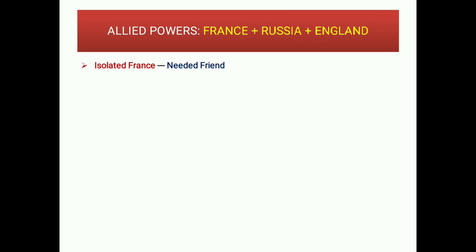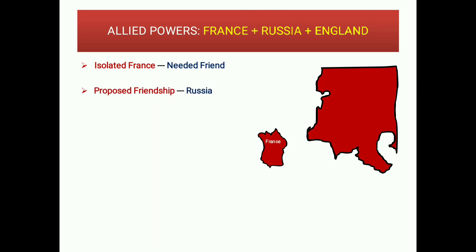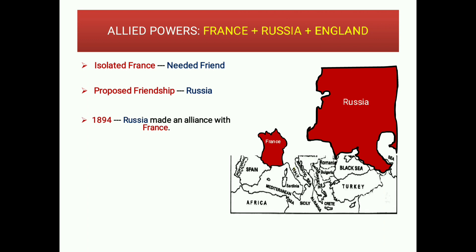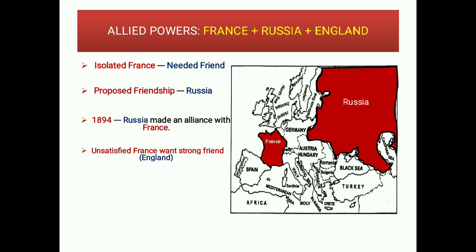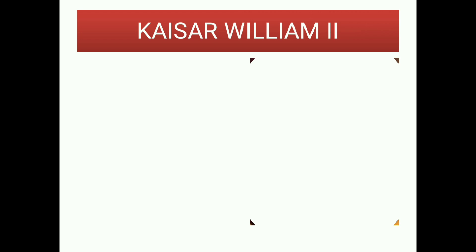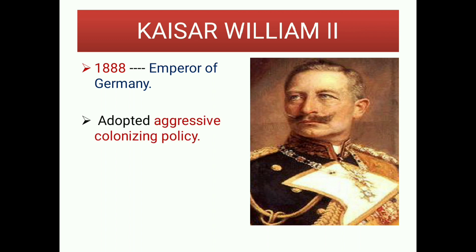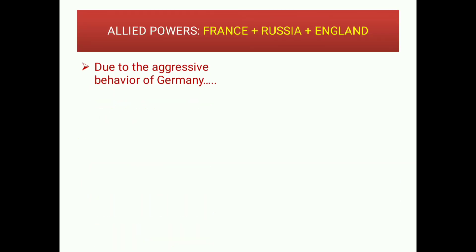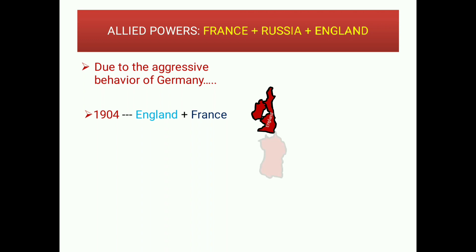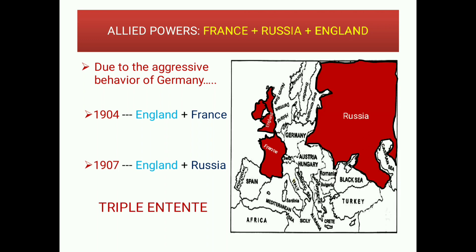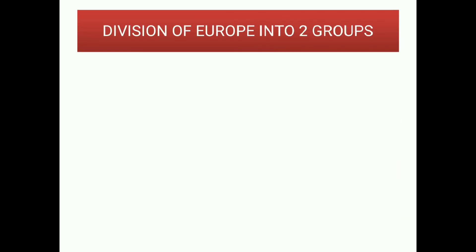Allied Powers — France, Russia, and England: Isolated France needed friends. France proposed friendship to Russia, and in 1894 Russia made an alliance with France. Meanwhile, Kaiser Wilhelm II became Emperor of Germany in 1888 and adopted an aggressive colonizing policy, increasing conflict with England. Due to Germany's aggressive behavior, England and France allied in 1904, and England and Russia allied in 1907, thus forming the Triple Entente, dividing Europe into two armed groups.